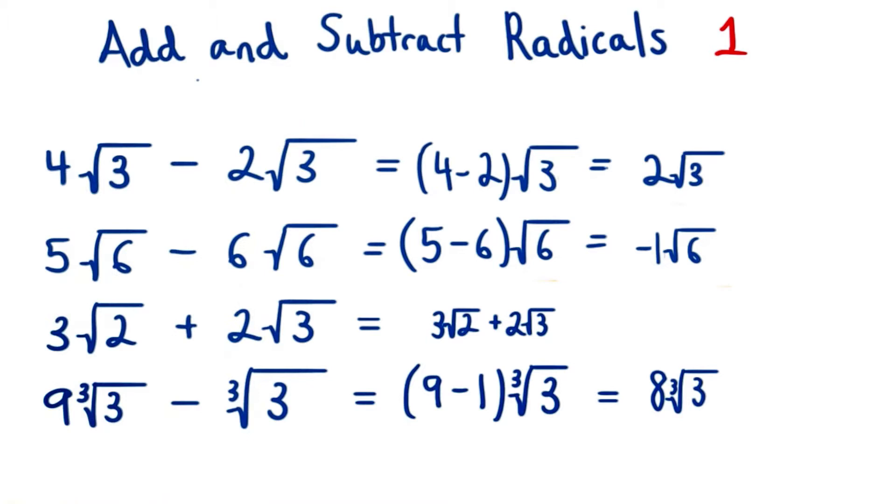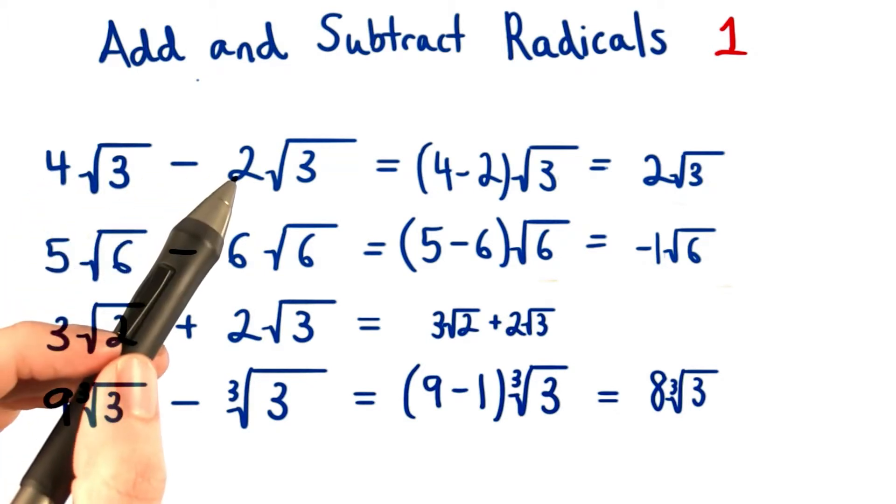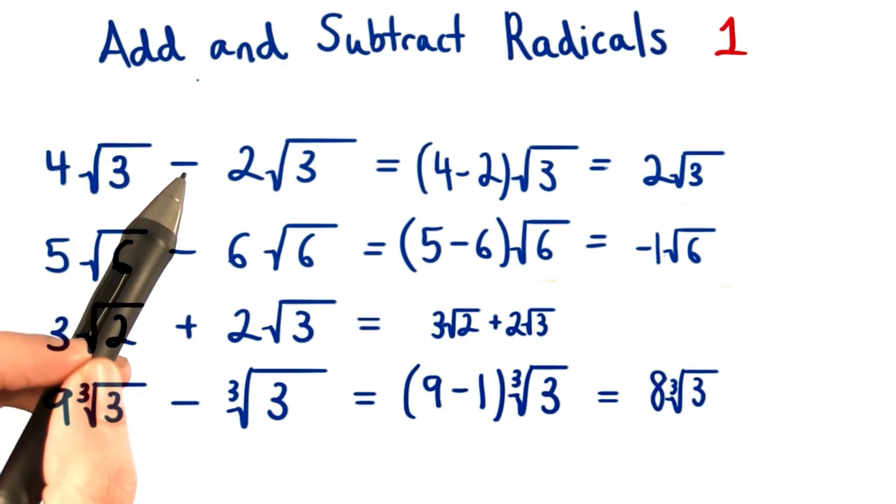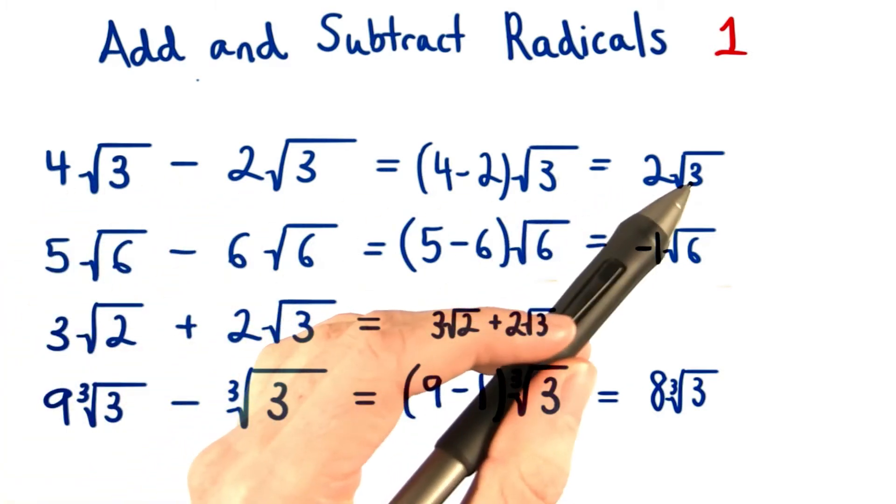Whenever I add and subtract radicals, I just look at the numbers in front and then look at what I need to do with them. Should I add or subtract these? In this case, I subtract. So I just have 4 minus 2, which is 2√3.